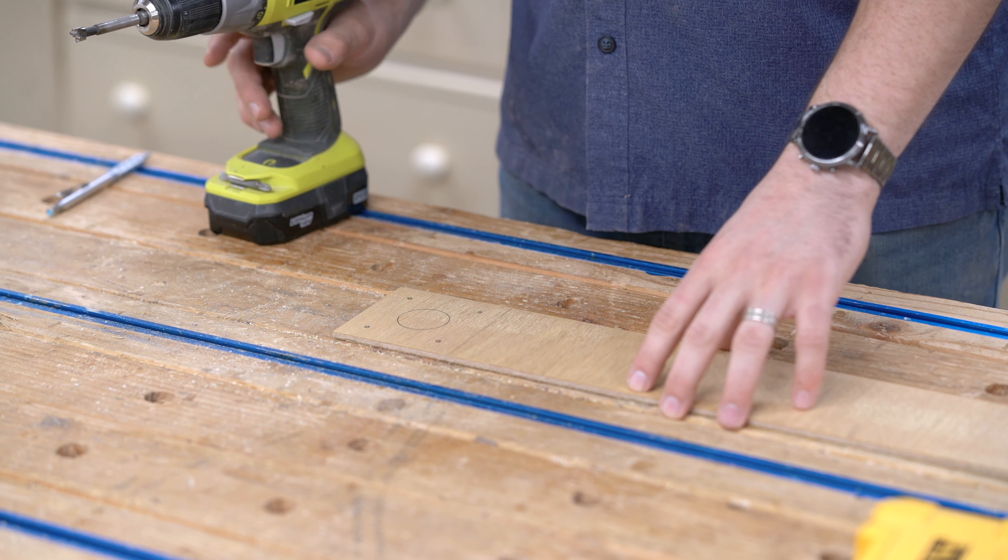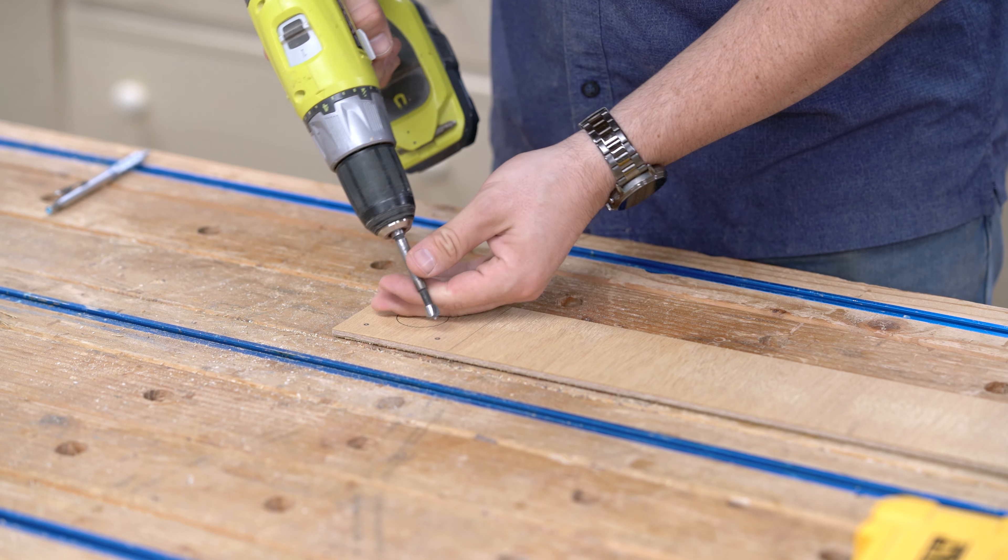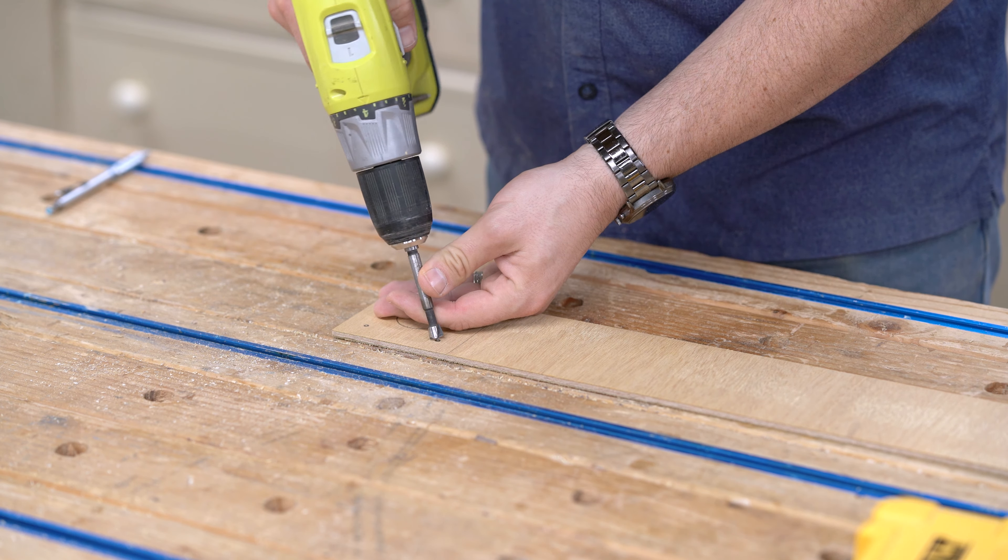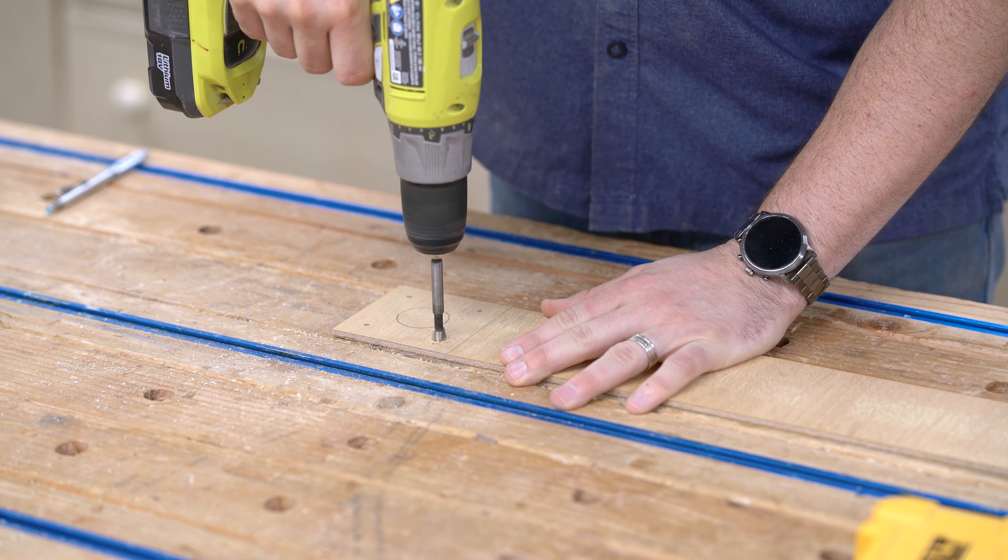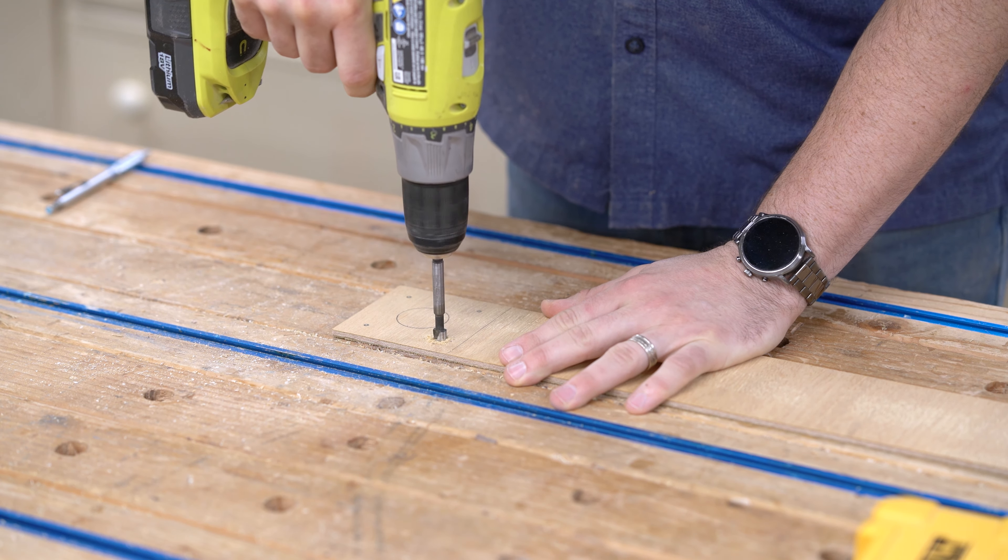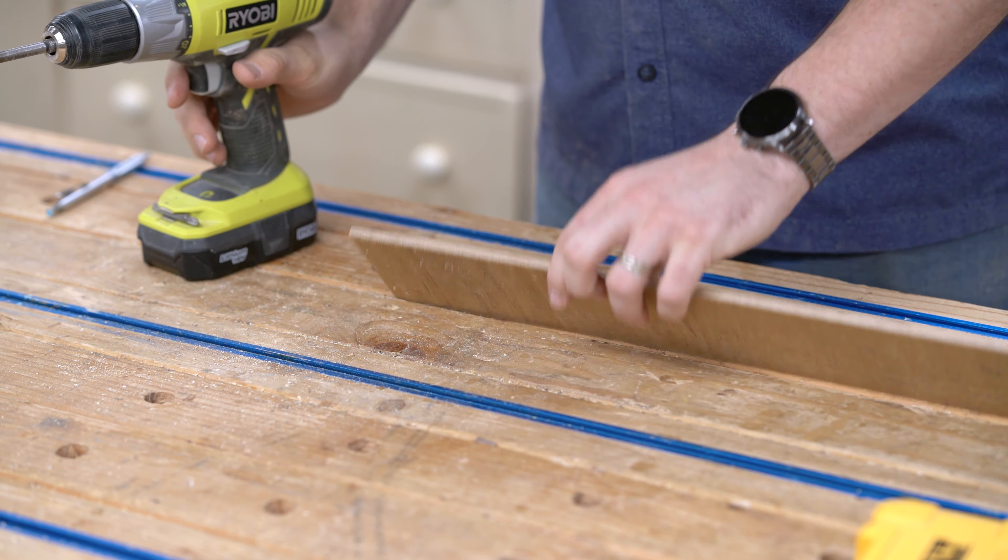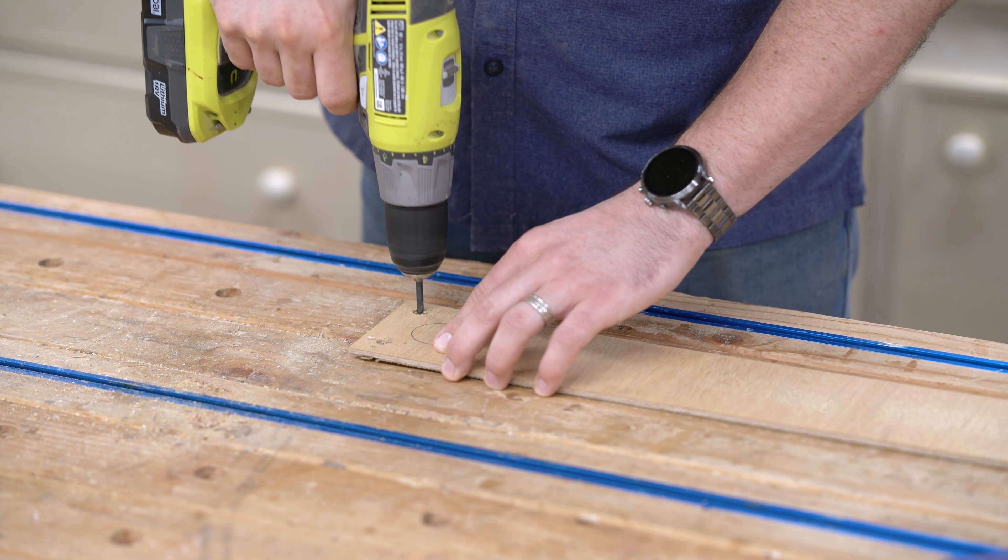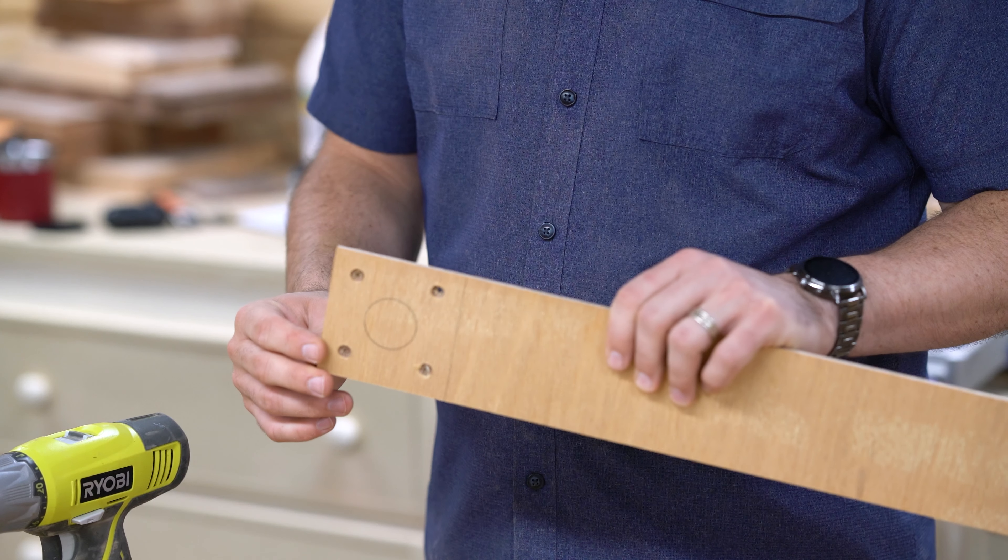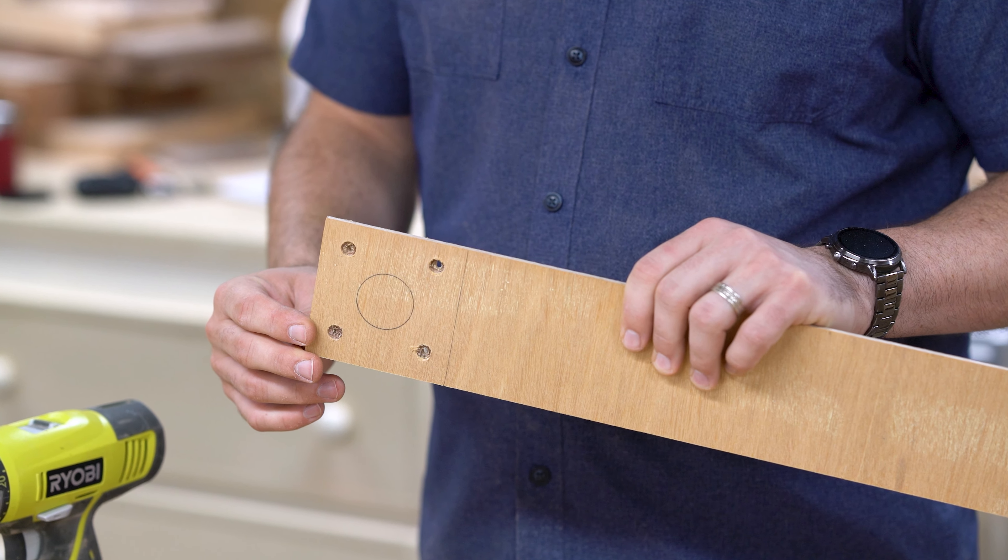The base plate is held onto the router with machine screws. The holes are countersunk so the screw heads do not stick above the surface. I'm going to drill the countersinks first using an oversized Forstner bit. You want to go just far enough so the screw heads sit below the surface. Follow that up with drilling out the screw hole. Pick a bit that's a little bigger than the diameter of the screw, but not bigger than the screw head, obviously.